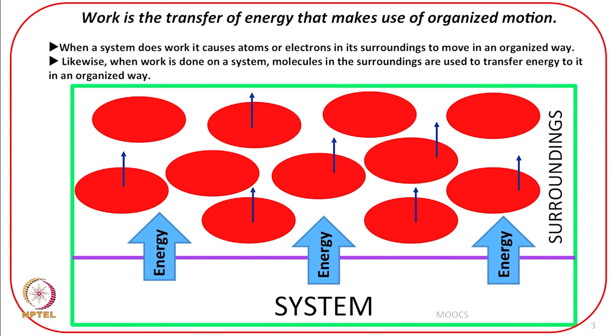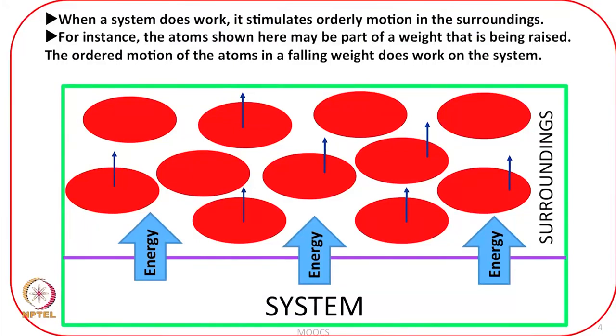When the work is done on the system, the molecules in the surroundings are used to transfer energy into it in an organized way. The transfer of energy from the surroundings to the system occurs in an organized way when the surroundings do work on the system. When a weight is being raised, the transfer of energy occurs in an orderly motion. When the weight is being lowered, the ordered motion of the atoms in the lowering substance does work on the system. As far as work is concerned, it is the transfer of energy in an orderly fashion, in an orderly motion.